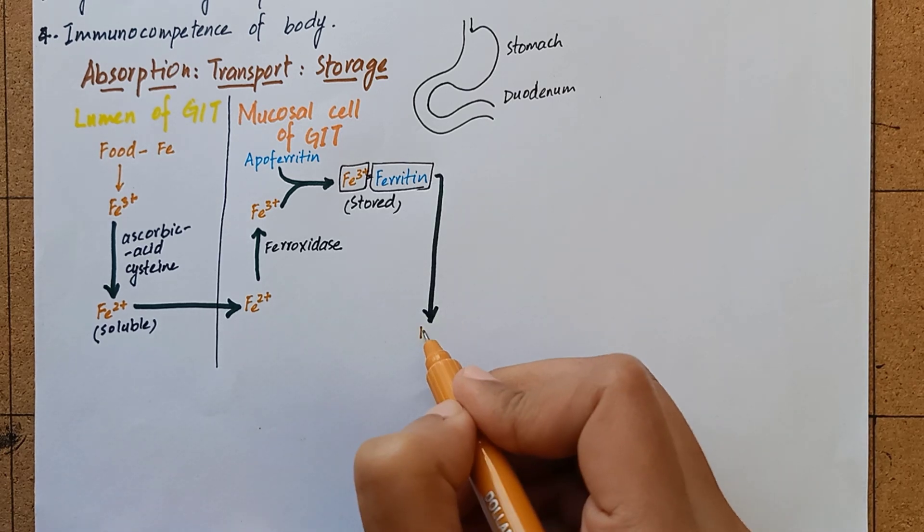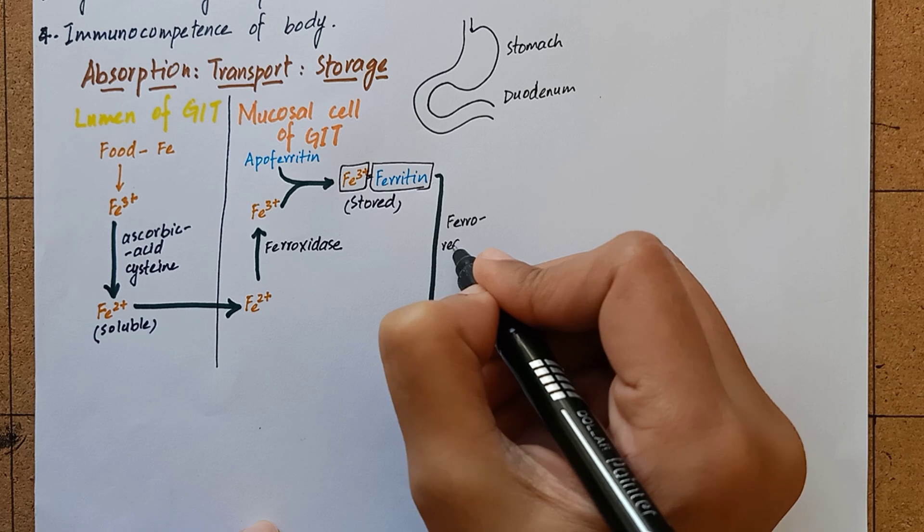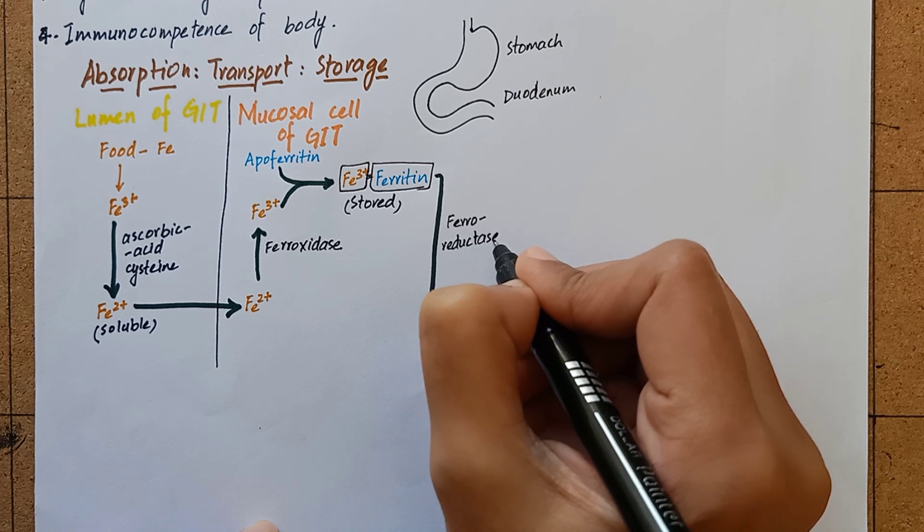From mucosal cells, iron may enter the bloodstream which mainly depends on the body's need or it can be lost when the cells are desquamated.